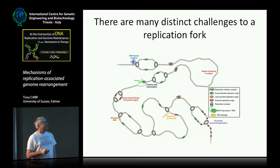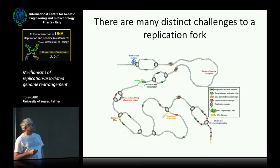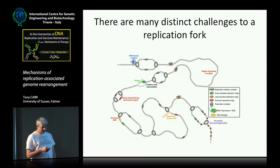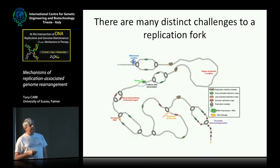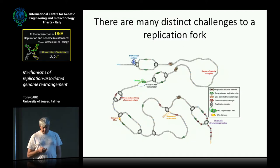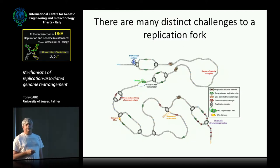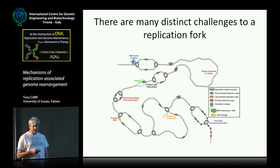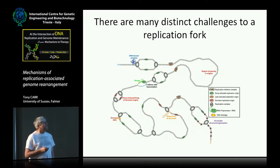Things like DNA-bound proteins, at-risk DNA sequence motifs, collisions with transcription, maybe chromatin structure and things like that. Many of the ways in which we've addressed this traditionally was to treat cells with DNA-damaging agents or agents such as hydroxyurea or aphidicolin, which randomly cause stochastic replication problems. And that makes it quite difficult to really see what's going on at the molecular level.